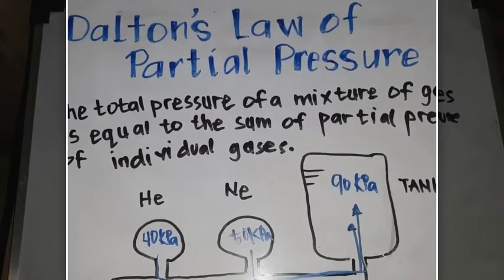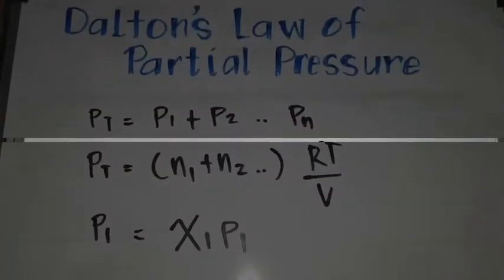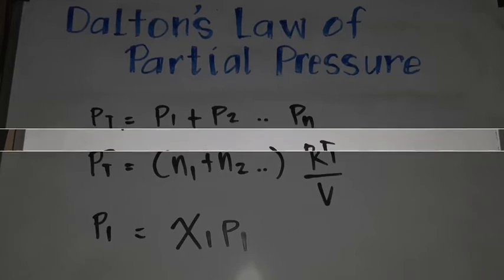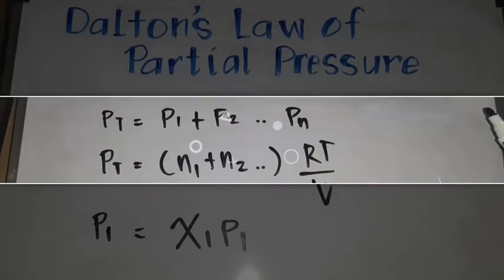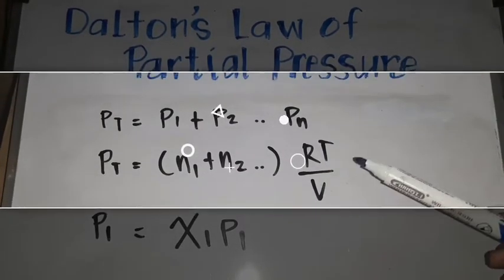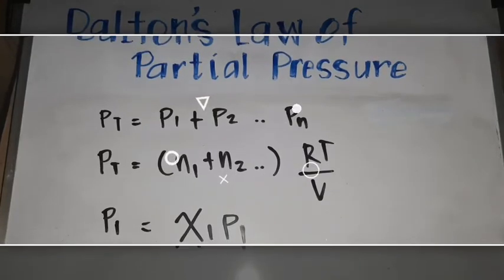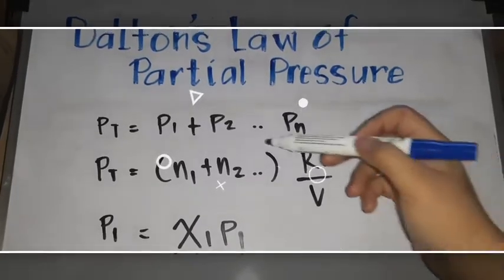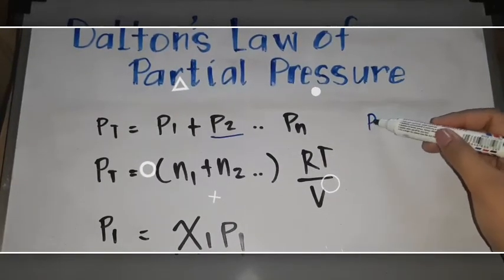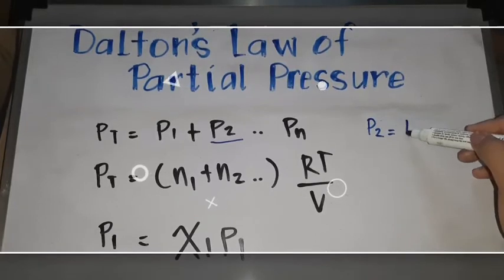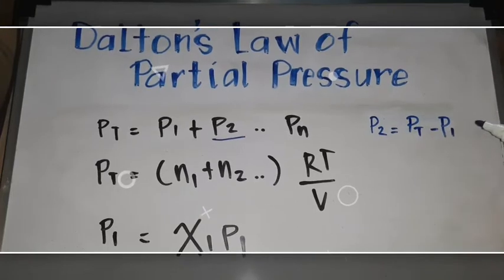We solve this using different formulas. The first one is: total pressure is equal to P1 plus P2, and so on, depending on the number of given partial pressures. We can also derive this formula — for example, if the unknown is P2, we just transpose P1. So P2 is equal to total pressure minus the partial pressure of the first gas.